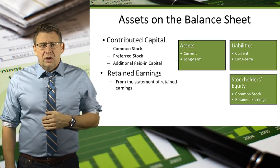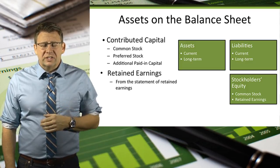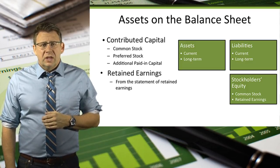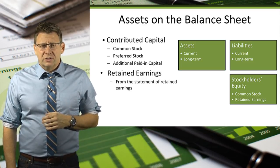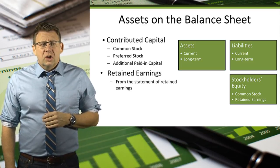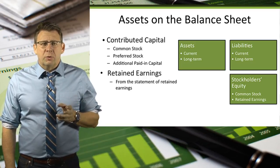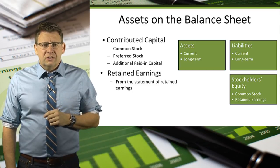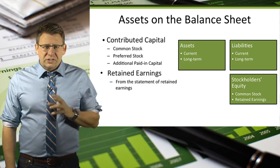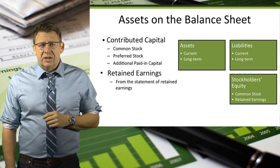Stockholders' equity reports the total amount of equity the stockholders have in the company. It is commonly divided into two sections: contributed capital, which is the section that reports common stock, and retained earnings, which is the section that reports the ending retained earnings balance from the statement of retained earnings.